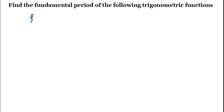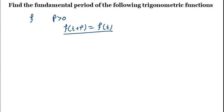We say a function f, if you're given a function f, it is said to be periodic with a period greater than zero if f of t plus p, where p is a period, is the same as or equals to f of t itself. So if this is satisfied, then that function f is actually periodic.